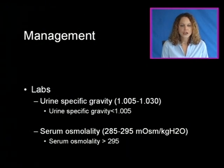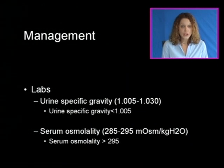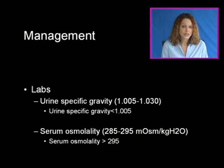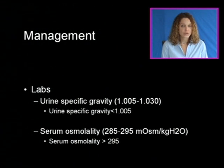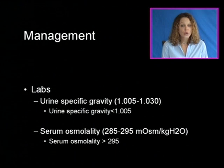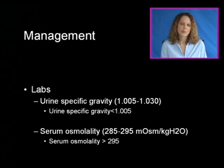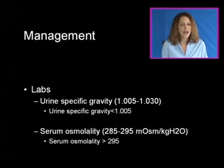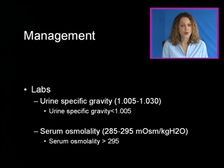Labs include urine specific gravity, which is normally 1.005 to 1.030 — in DI it will be less than 1.005. Serum osmolality, normally 285 to 295, will be increased to greater than 295 because the urine is very dilute while the blood is very hyperosmolar.